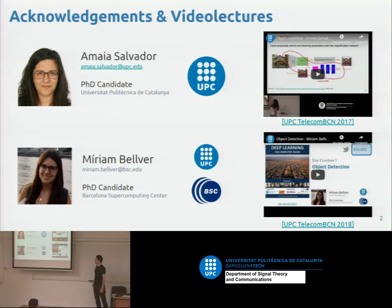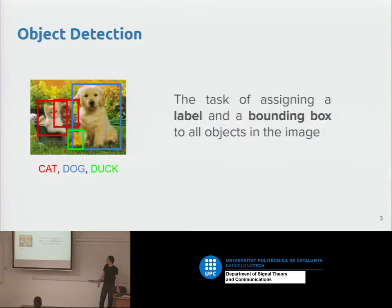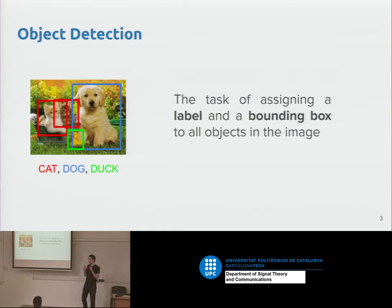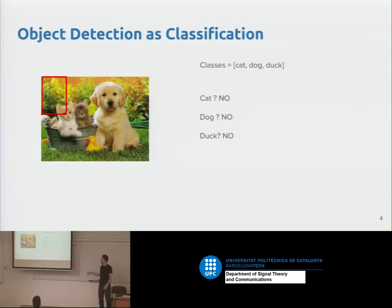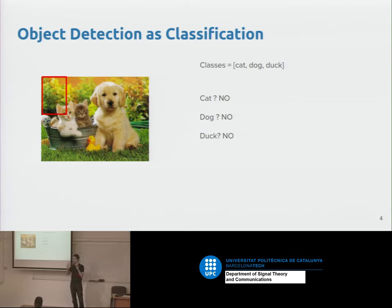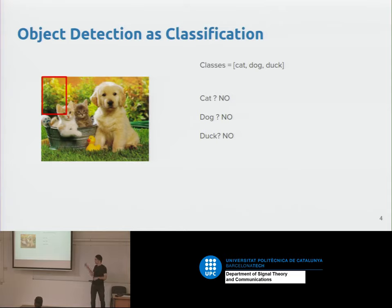These slides were made by Amaya and Miriam, who have very nice lectures online, so check them out. Object detection is a traditional task in computer vision — it's basically the task of detecting all the objects in an image and assigning them a bounding box and a label. We will treat object detection similarly to image classification: instead of classifying the whole image, we classify each crop of an image.